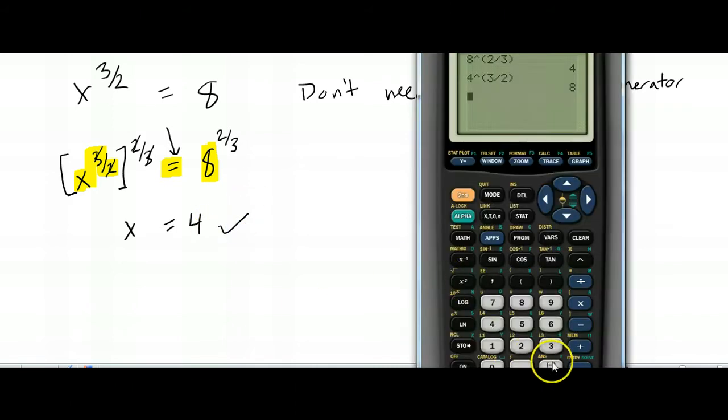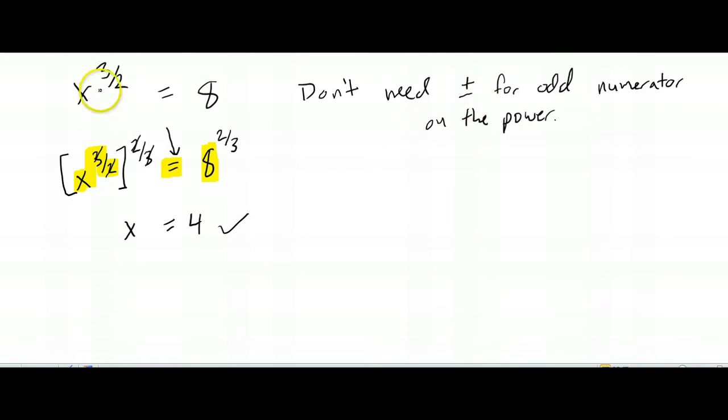But, remember, we don't need the negative 4 this time. This time, if I put negative 4 in a parentheses and tried to check it, it's not going to work. I'll get a non-real answer. So, we don't need the plus and minus if we have an odd numerator. This is our only answer.